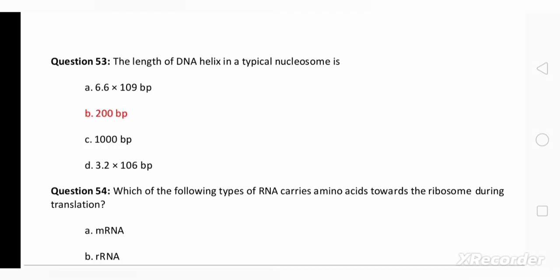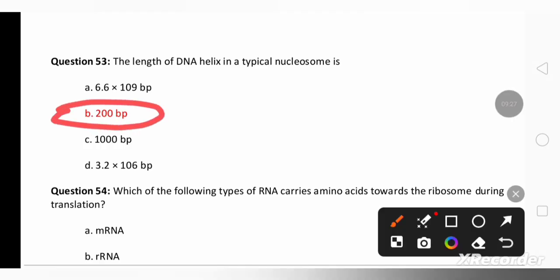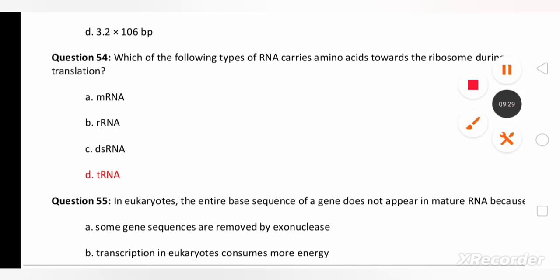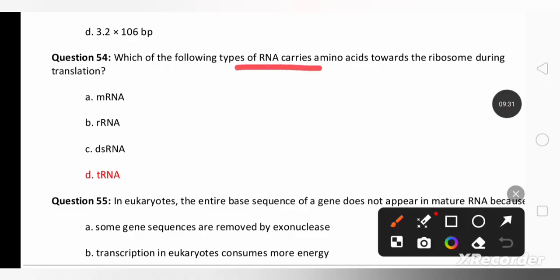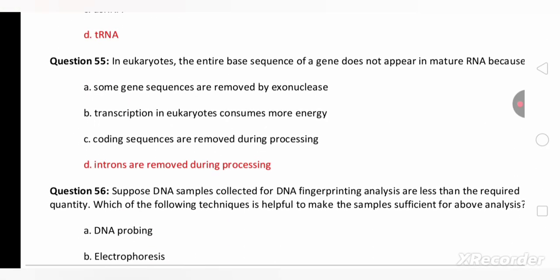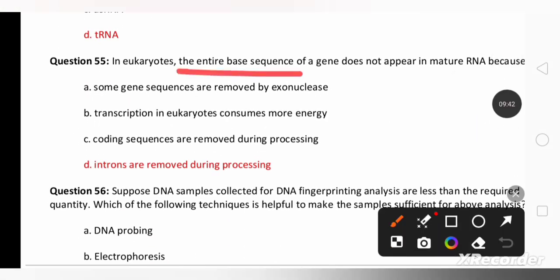The length of the DNA helix in a typical nucleosome is 200 base pairs. It's an easy question. Which of the following type of RNA carries amino acid towards ribosome during translation? Translation is a process of protein synthesis, so amino acids are carried by transfer RNA. In eukaryotes the entire base sequence of gene does not appear in mature mRNA because introns are removed during processing, during splicing. Introns, non-coding sequences, have been removed.